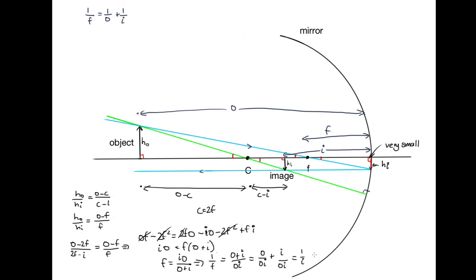So O over O I is just 1 over I, and I over O is just plus 1 over O. So now we've shown that 1 over F is equal to 1 over I plus 1 over O, as long as this distance is very small.